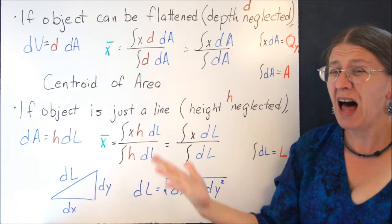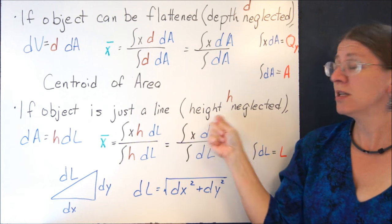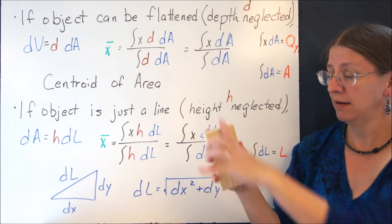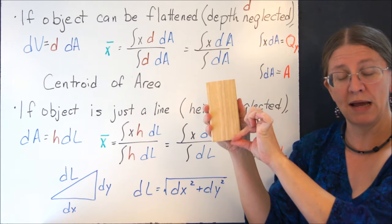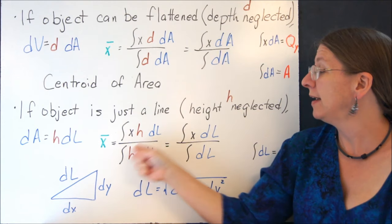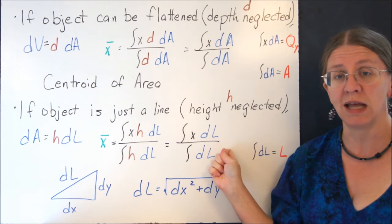You can even do it with just a line. If your object is just a line so your height is being neglected, essentially shrink this all the way down until it's a line, pull the height out and divide. And now you have the centroid of the line.